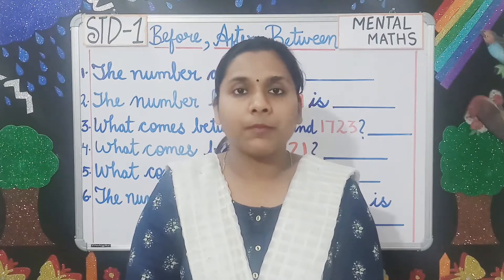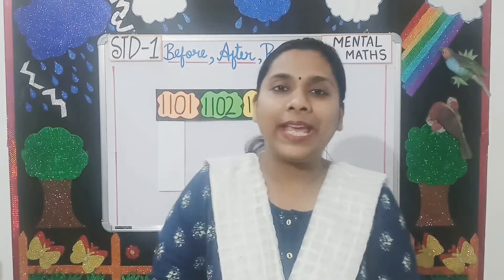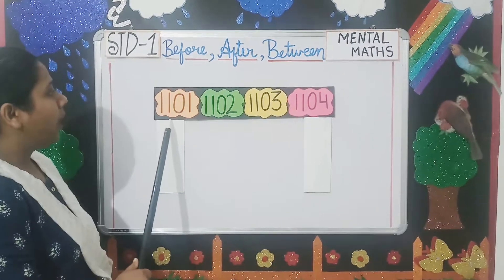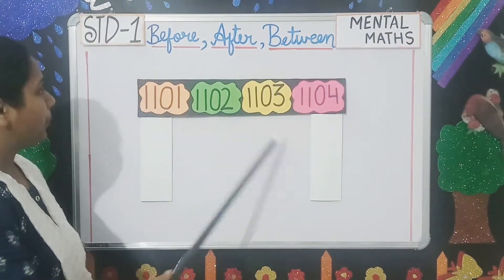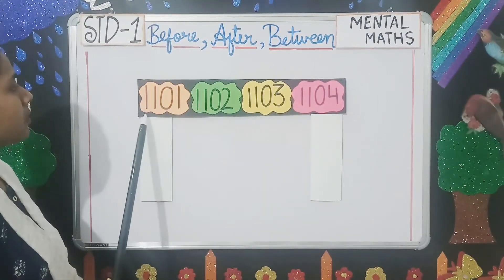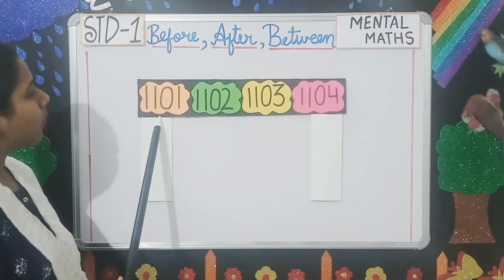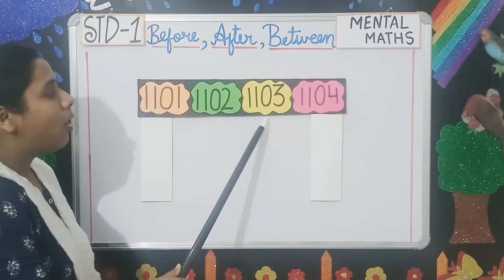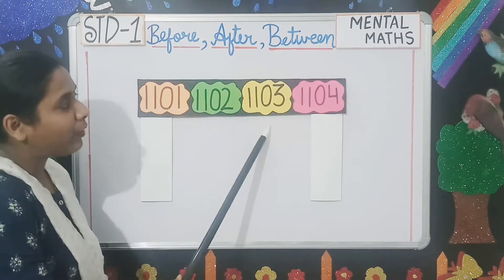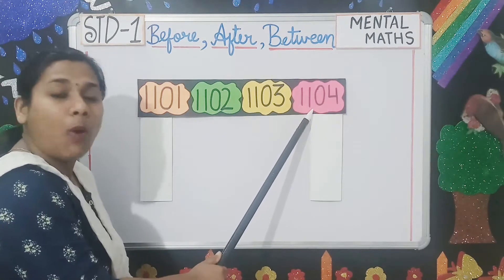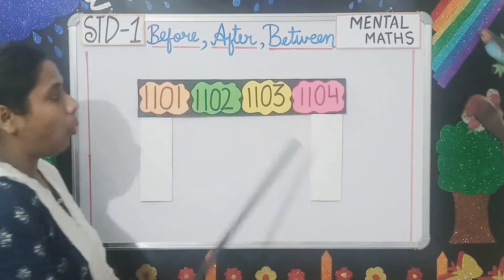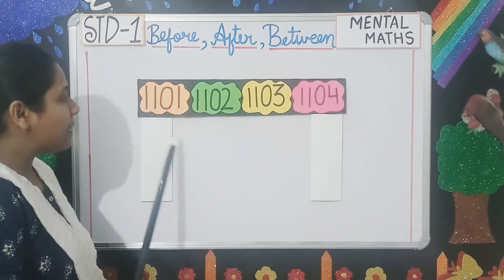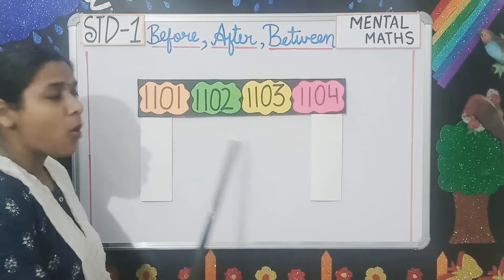Clear students? Now let us see one example. See here — four numbers are written: 1101, 1102, 1103, 1104. These are the counting numbers in the forward direction, that means this is forward counting.